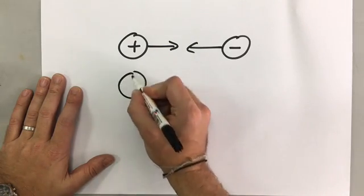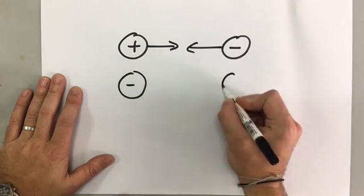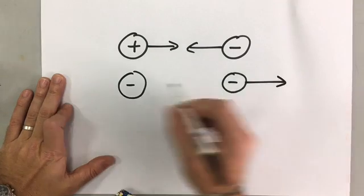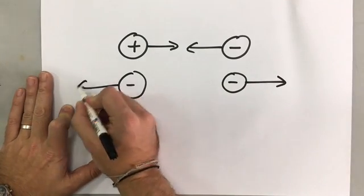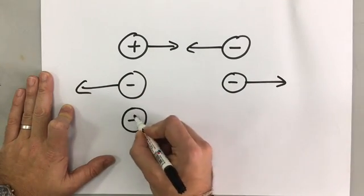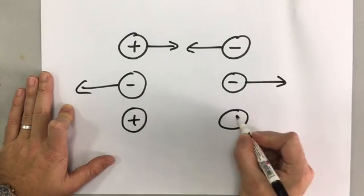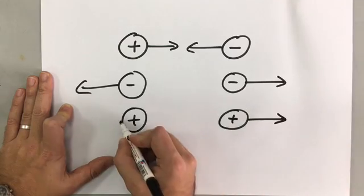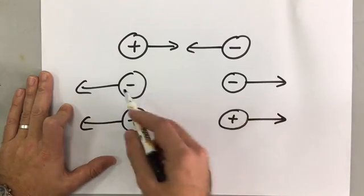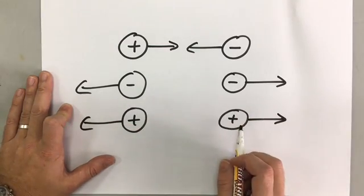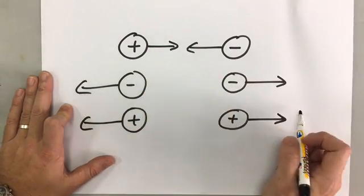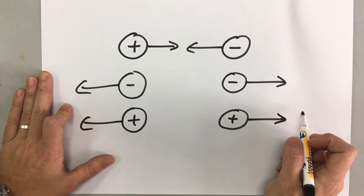If you have two negative charges they repel, and if you have two positive charges they also repel. So like charges repel, unlike charges attract.